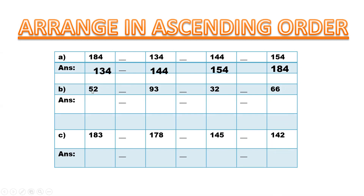Now the second question: 52, 93, 32, 66. So which is the smallest — 5, 9, 3, or 6? Always, this is 3, so 32 is the smallest. Then 52, then 66, and the last one is 93. So we write: 32, 52, 66, 93.